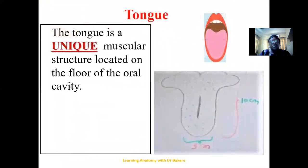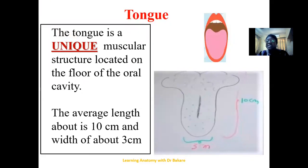We can define the tongue as a unique muscular organ that is located on the floor of the oral cavity. The average length of the tongue is about 10 centimeters and 3 centimeters in width or breadth.